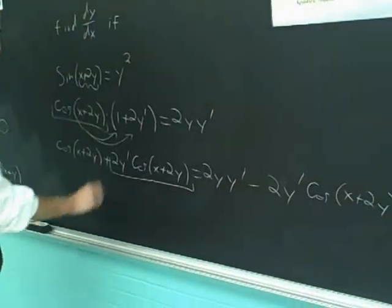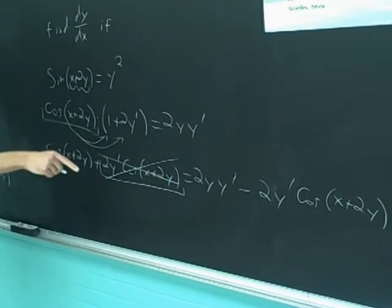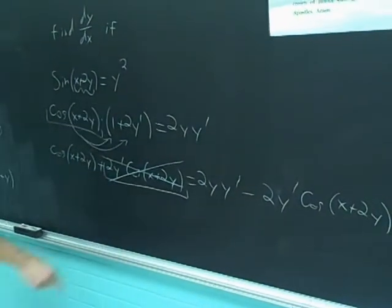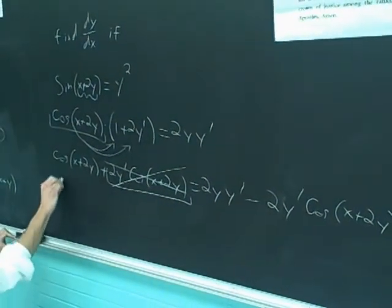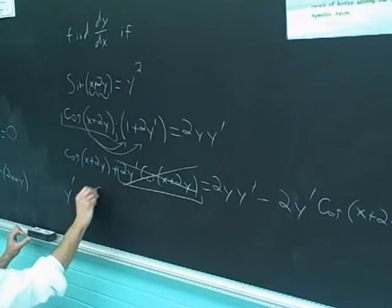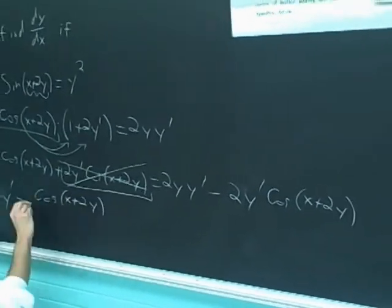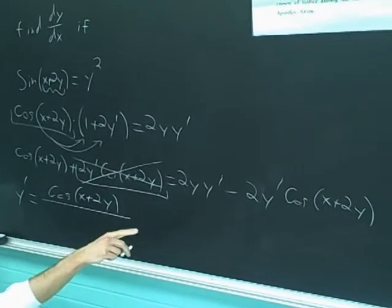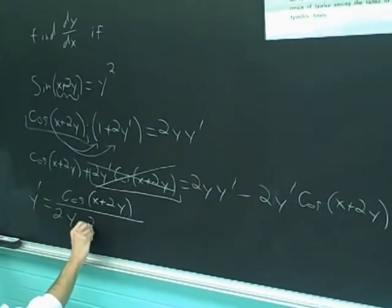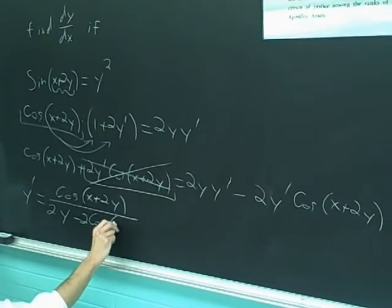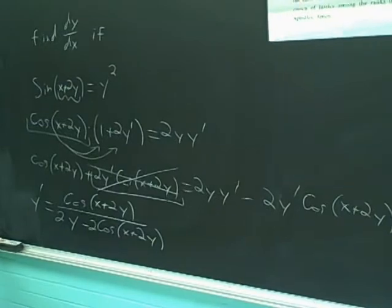If you bring that to the other side, the y prime will factor out. And then you can just divide through by what's left over, leaving you with y prime equals minus cosine x plus 2y all divided by, when you take it out, you get 2y minus 2 cosine x plus 2y. That's all there is to it.